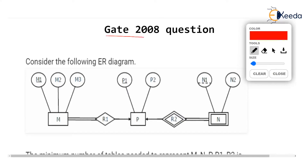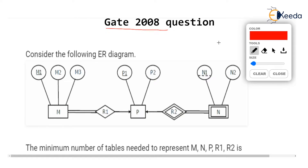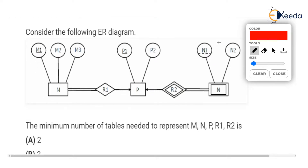A GATE 2008 question gives an ER diagram and asks: if you convert this ER diagram into relations (tables), how many minimum number of tables are needed to represent the entire diagram, which contains M, N, P, R1, and R2? M, N, and P are the entities and R1 and R2 are the relations.